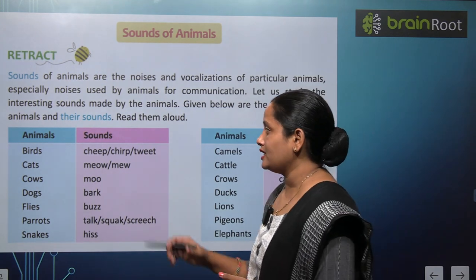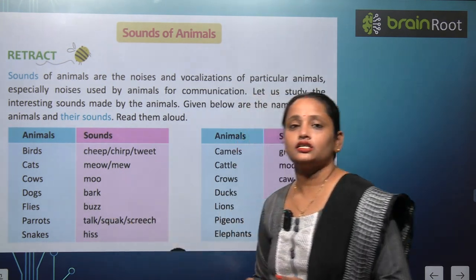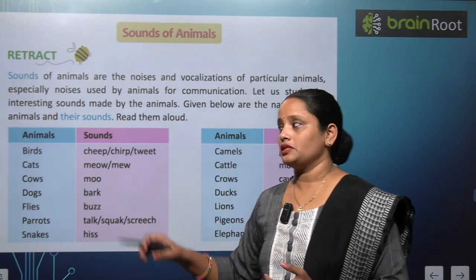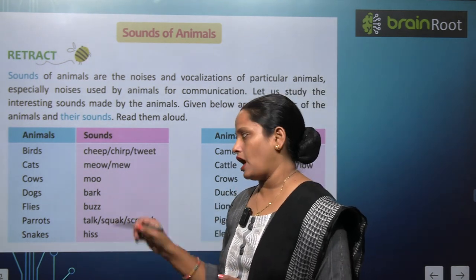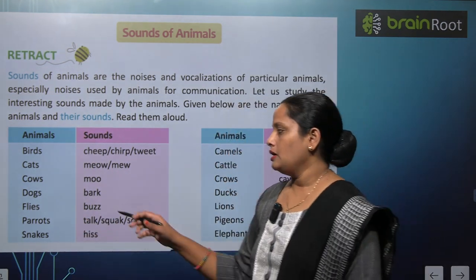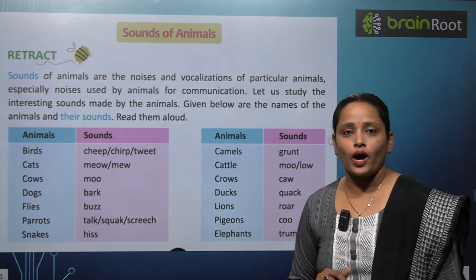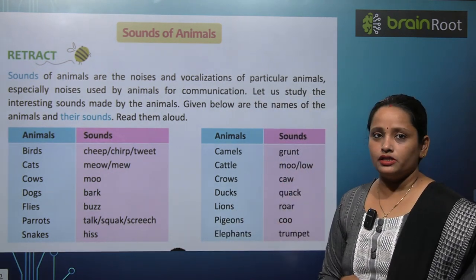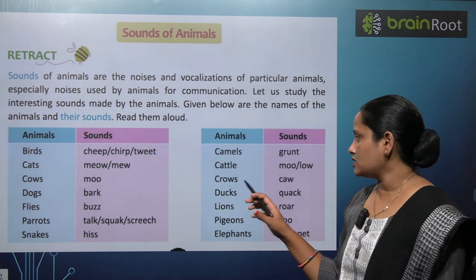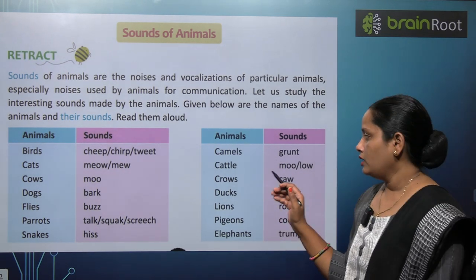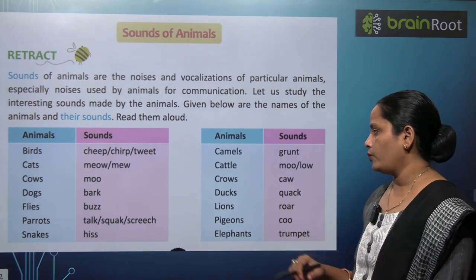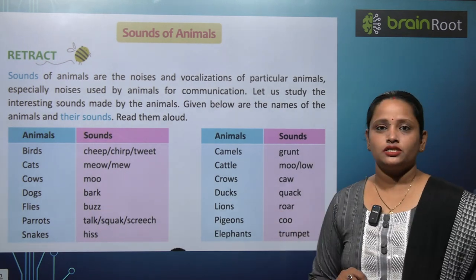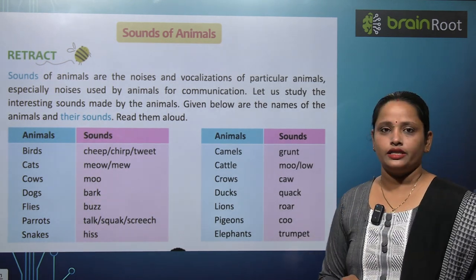Birds ka jo sound hai — cheep, chirp and tweet. Cats — mew. Cows — moo. Dogs — bark. Flies — buzz. Parrots — talk, squawk and screech. Snakes — hiss. Camels — grunt. Cattle — moo or low. Crows — caw. Ducks — quack. Lions — roar. Pigeons — coo. Elephants — trumpet. And the sound of a mosquito is whine.